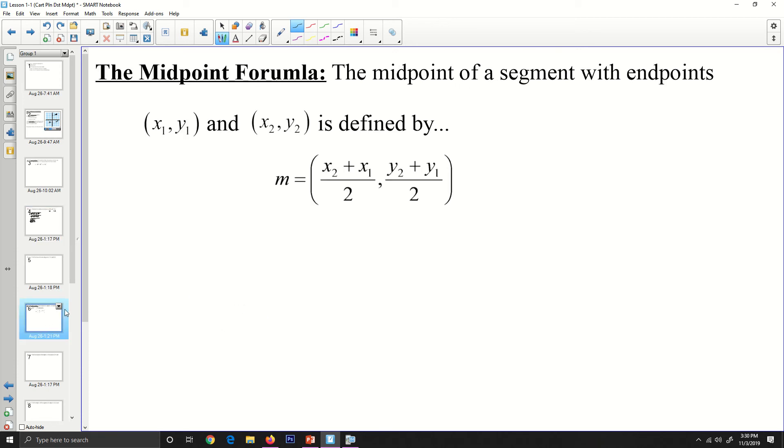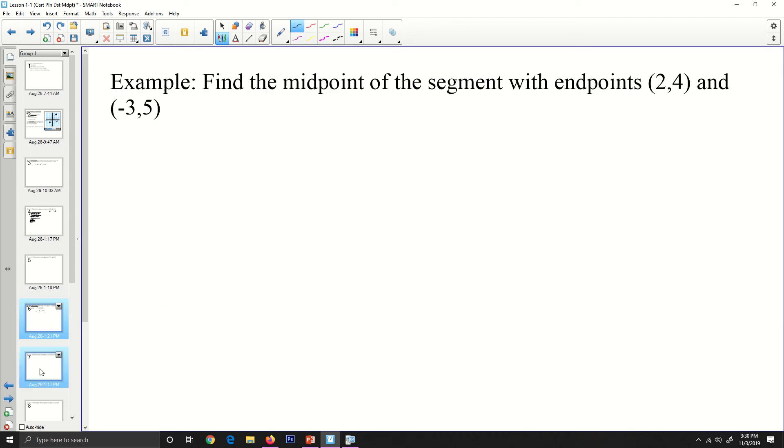Moving on to the next one, the midpoint formula. The midpoint of a segment with endpoints x1, y1, and x2, y2 is defined by this equation where m is the midpoint. It's just the average of the x's and the average of the y's, so let's do an example of that.